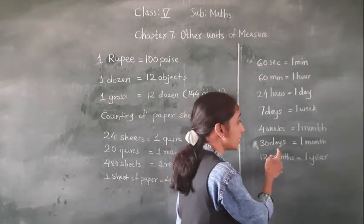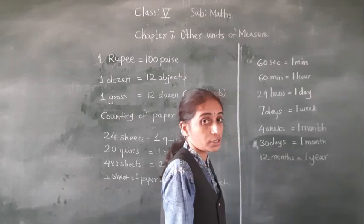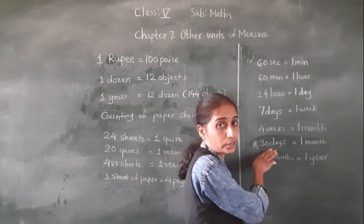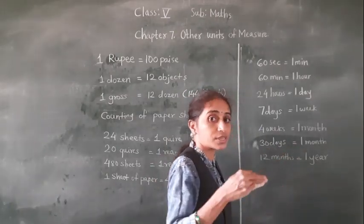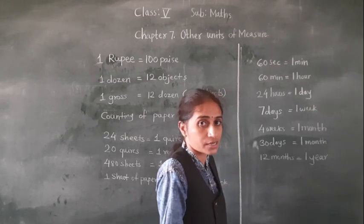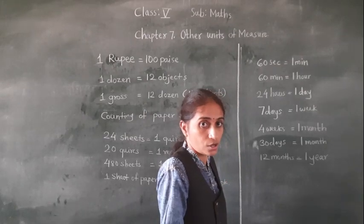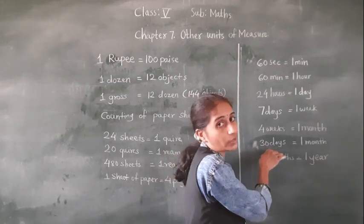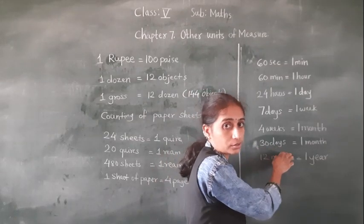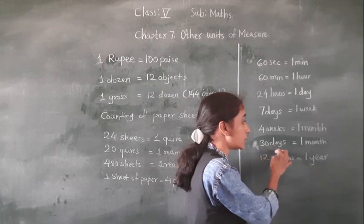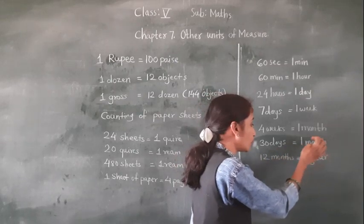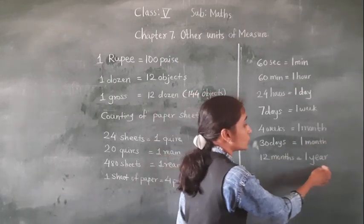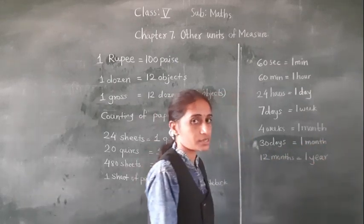Now, 30 days equals 1 month. For counting purposes we take 30 days. In months, sometimes 31 days are also there, but for counting we take 30 days. 30 days is equal to 1 month, and 12 months is equal to 1 year.